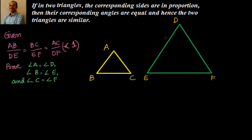So what I will do is take AB length on DE and mark DP equal to AB, finding point P. Similarly I will find point Q such that DQ equals AC, and join PQ. What we have constructed is DP equal to AB and DQ equal to AC.